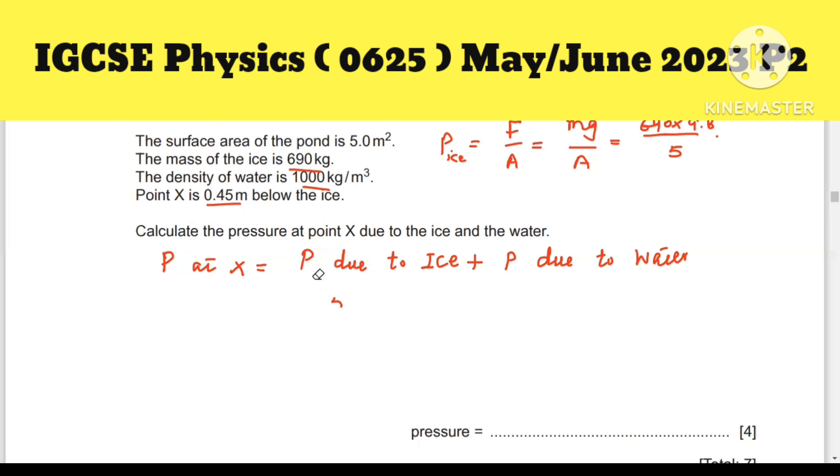Plus pressure due to water. Pressure in liquids: p = F/A, or you can write density × gravitational acceleration × height. If you put the values: ρ is 1000, multiply by 9.8, multiply by h, which is 0.45. So you will get pressure due to water is 4410 pascals.